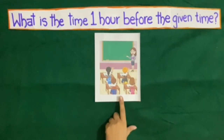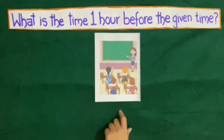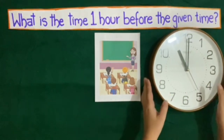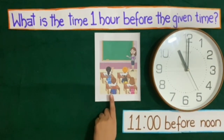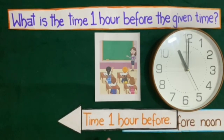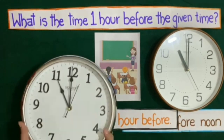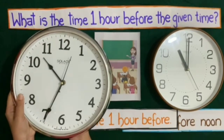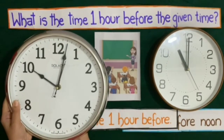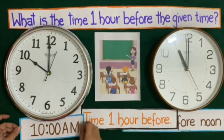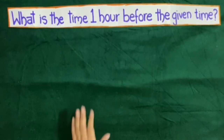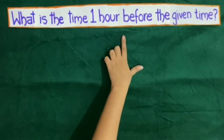A teacher was giving instructions to students about their exam. She told the students that their exam will start at 11 before noon, that is at 11 AM, and that they have to reach the examination hall before 11 AM. Time 1 hour before 11 AM will be 10 AM. Now with the help of this activity you have learned time 1 hour before.